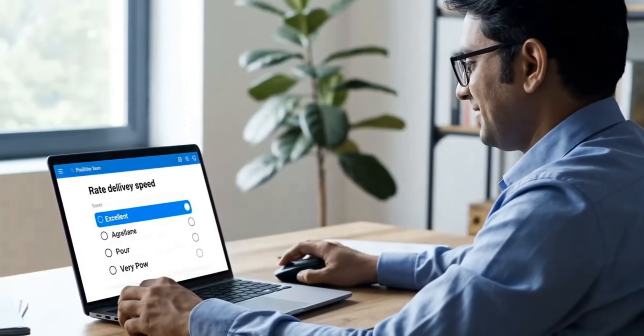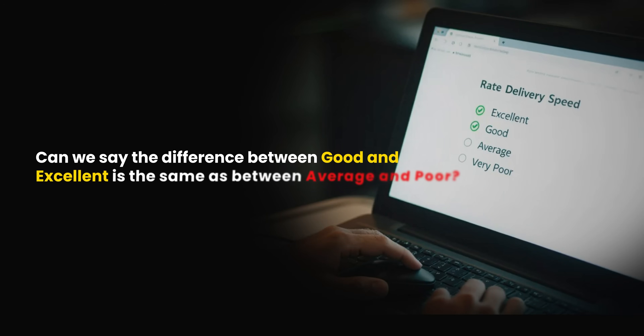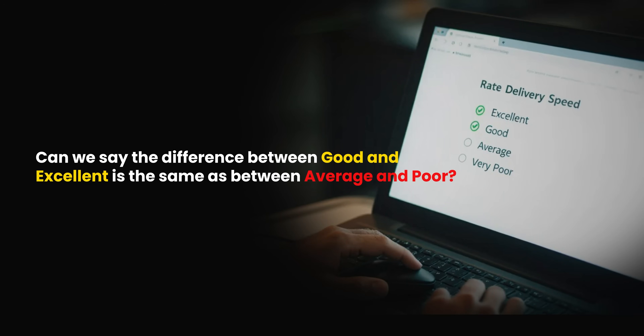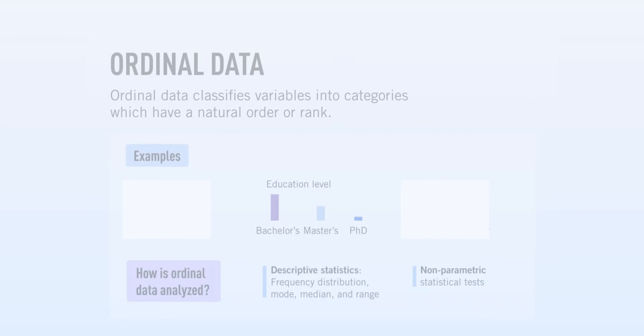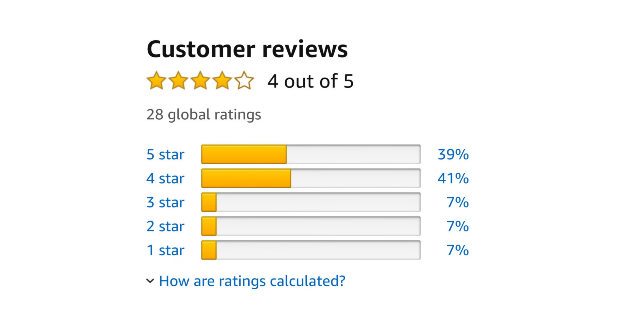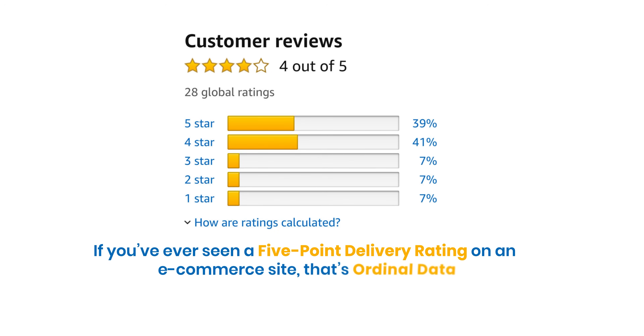There is a clear ranking here — excellent is better than good, which is better than average, and so on. But can we say the difference between good and excellent is the same as between average and poor? Not really. That's why ordinal data has order but not equal intervals. In practice, ordinal data is common in research, product reviews, and feedback forms. If you have ever seen a 5-point delivery rating on an e-commerce site, that's ordinal data.